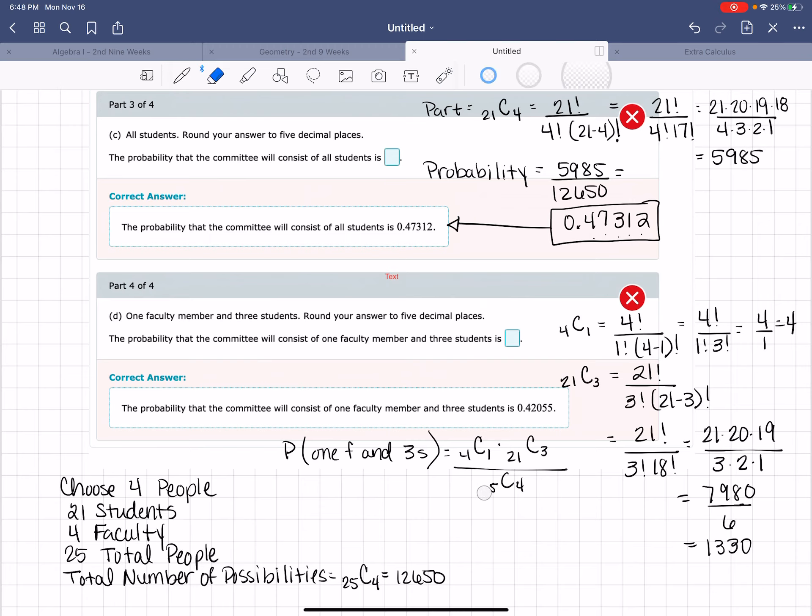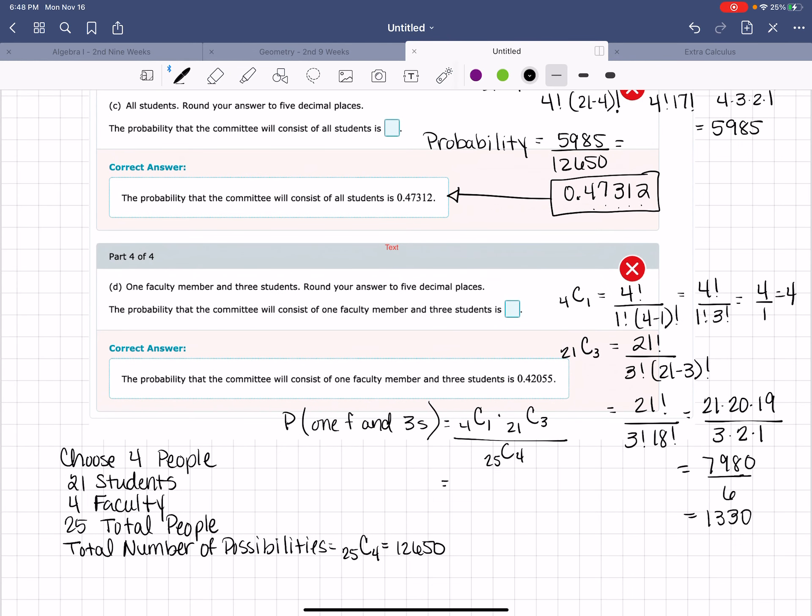That 25 doesn't look nice. Let me fix him. 25 choose 4. And that will give me 4 times 21 choose 3, which we found to be 1,330, all over 25 choose 4, which is still 12,650.